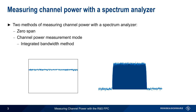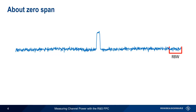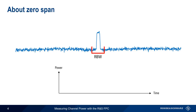Let's start with zero-span mode. Remember that in most cases, a spectrum analyzer measures spectrum by effectively sweeping a resolution bandwidth filter across the span, measuring the power along the way. We can, however, also set the span to zero, in which case the resolution bandwidth filter stays parked on a single frequency. This causes the analyzer to display power versus time at that frequency. Although zero-span is most often used to measure time-varying or pulse signals, we can also use zero-span to measure channel power.